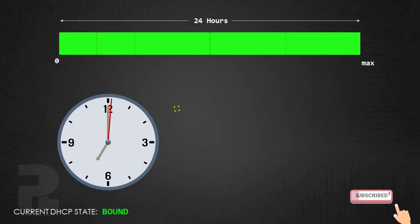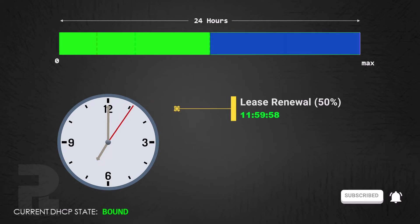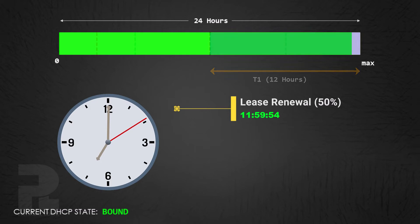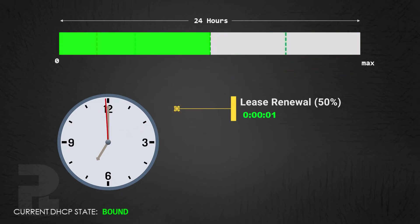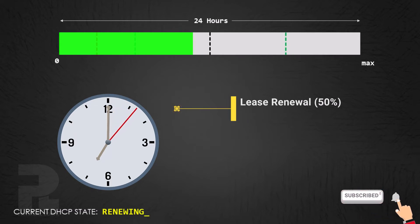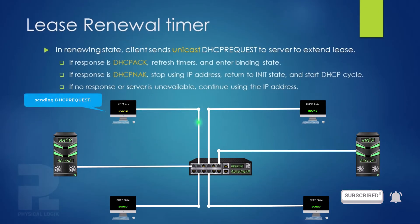The DHCP lease renewal timer controls lease renewal. The default value is 50% of the lease — that is, half of the lease expiration time. After this period, a DHCP client will enter a renewing state where it will contact the server that allocated its configuration information by sending a DHCP request message in unicast mode to the server.